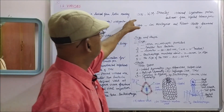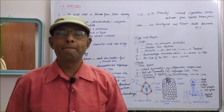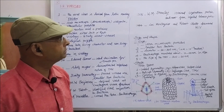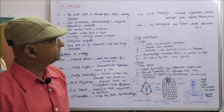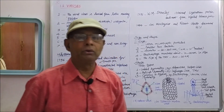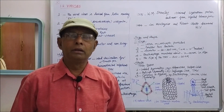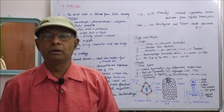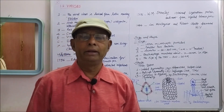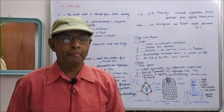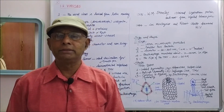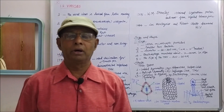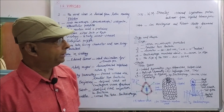In the year 1935, W.M. Stanley obtained crystalline protein sediment from infected tobacco juice, making crystals from the infected tobacco juice. He was jointly awarded the Nobel Prize in Chemistry in the year 1946 with J.H. Northcote.